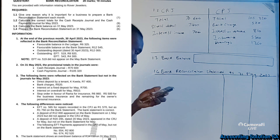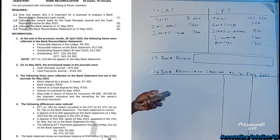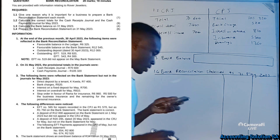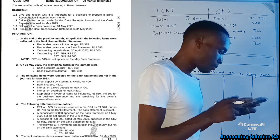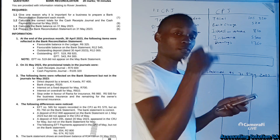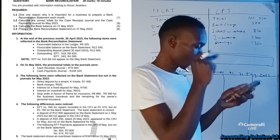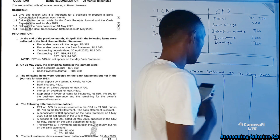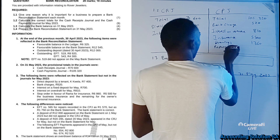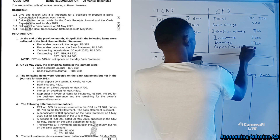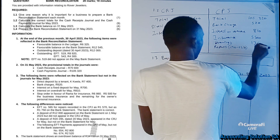Number four: the following difference was noticed. EFT number 565 for repairs recorded in the cash payment journal is R1,570, but R1,750 on the bank statement — and the bank statement is correct. In other words, we recorded a lower amount: R1,570 instead of R1,750. We have to find the difference and add it to repairs. The difference is R1,750 minus R1,570, which equals R180.